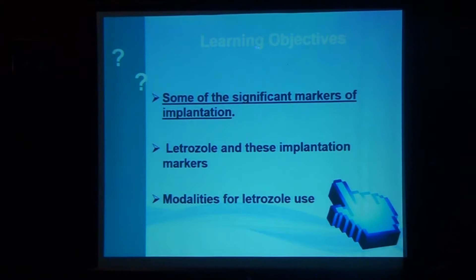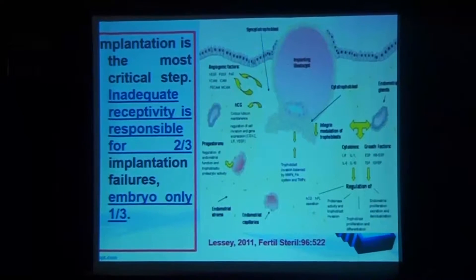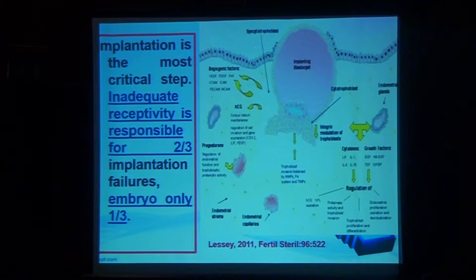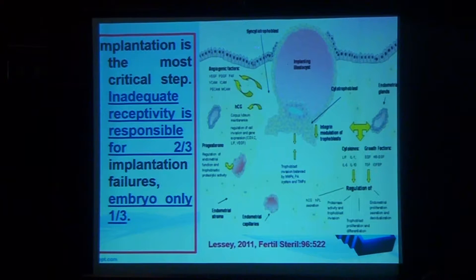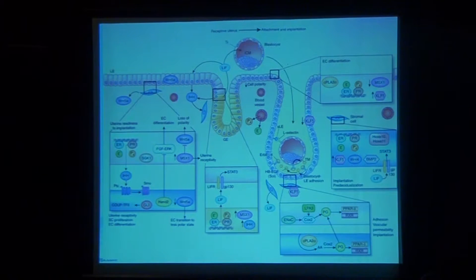The first objective: implantation is the most critical step in adequate receptivity. This is from basic science. Inadequate receptivity is responsible for two-thirds of implantation failure. Many things are going on for implantation to occur — many, many markers.